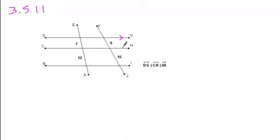In problem 11, again, you're dealing with three parallel lines with transversals passing through them. The segments of the transversals will be cut off proportionally.